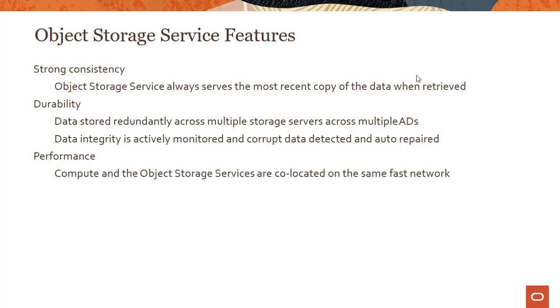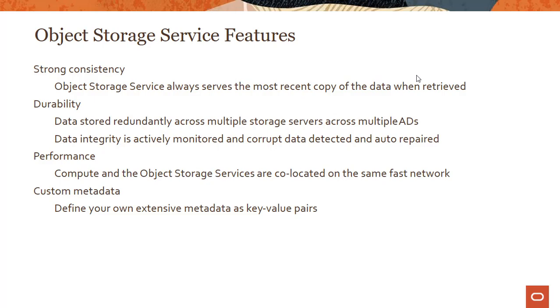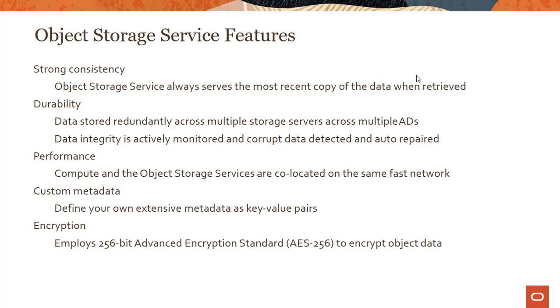In addition to strong consistency and high durability, OCI object storage also offers high performance. Compute and object storage services are co-located on the same fast network, so if your compute instances are reaching out to object storage, there is a guaranteed large, fast pipeline between them for very fast performance. You also have features like custom metadata, server-side encryption, and the ability to bring your own keys if you want to encrypt data using your own keys.